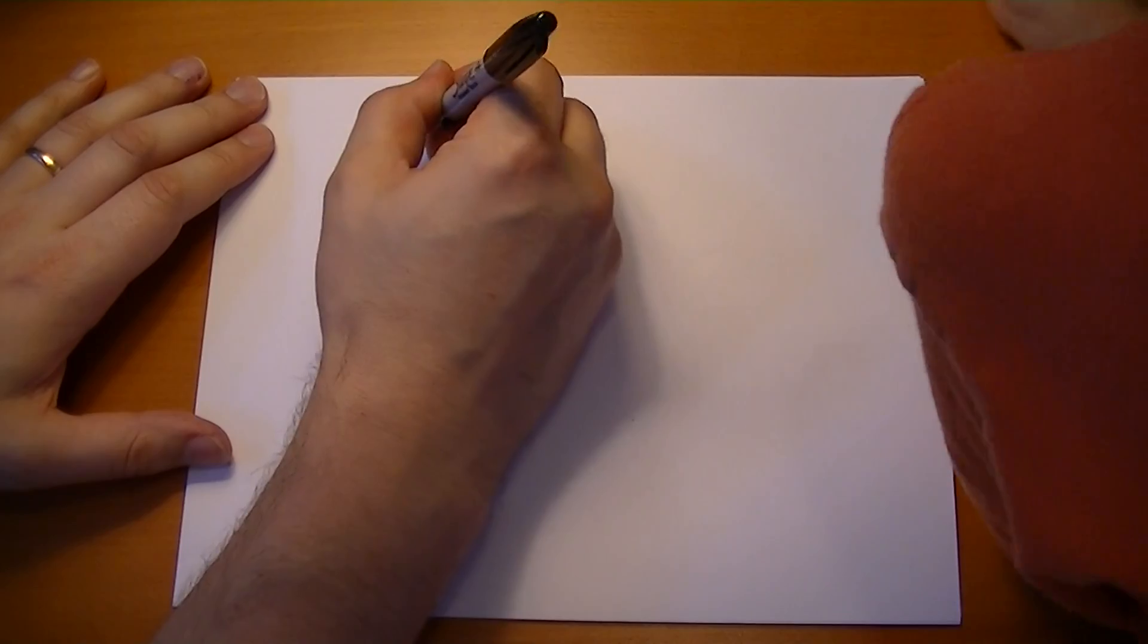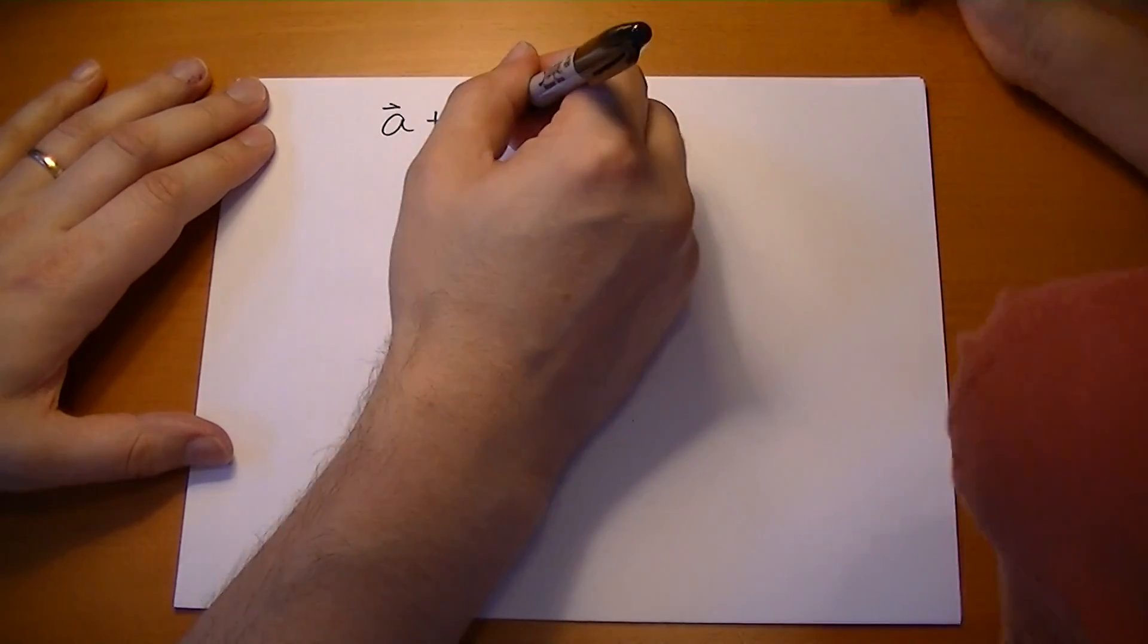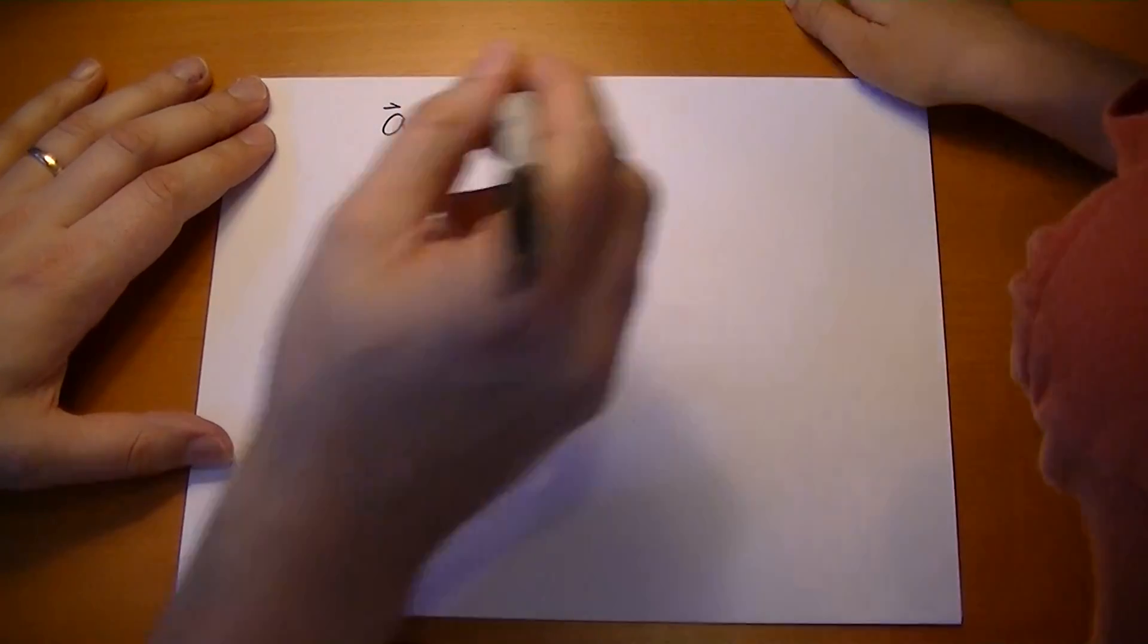So we write it out like this. We write A vector, we use a plus sign, B vector, and that will give you another vector, right?